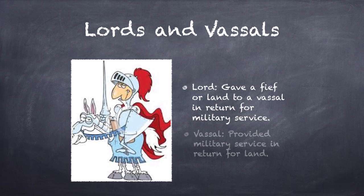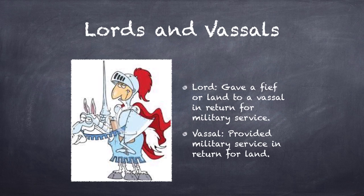A vassal, then, is a noble that provided military service in return for that land. Land was very powerful and very important. The more land you had, the more wealth you had, because then you could give that land away to other people and in return they would be in your military — that's how these great armies were made. The relationship between lords and vassals is something very important to remember: a lord gives land to a vassal in return for military service, and the vassal provides that military service in return for land. They both are getting something that they want.